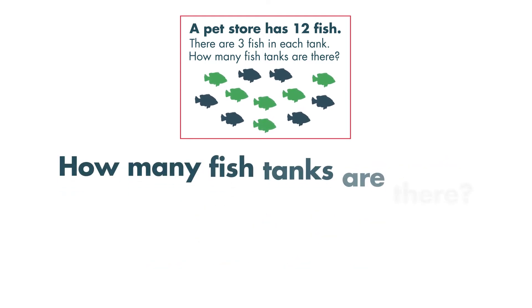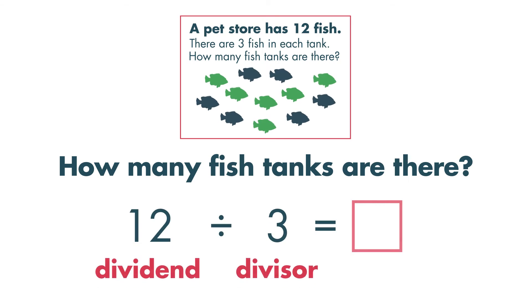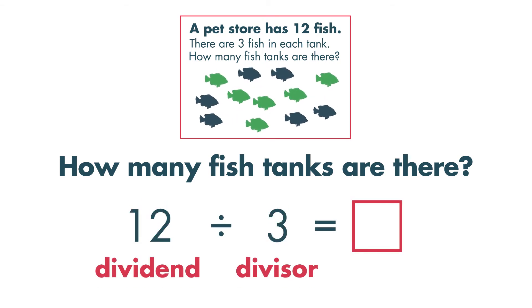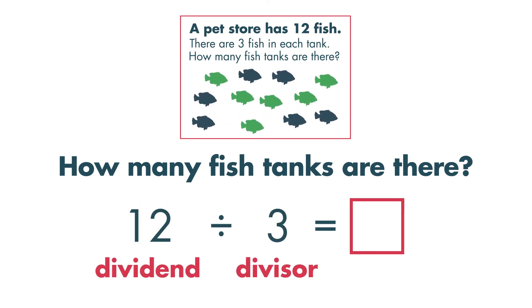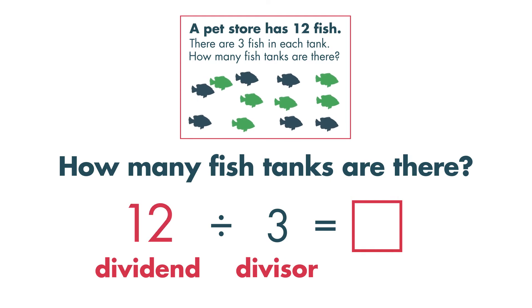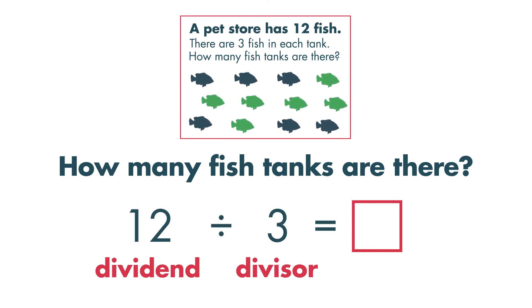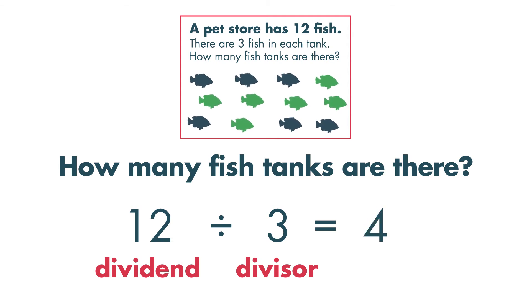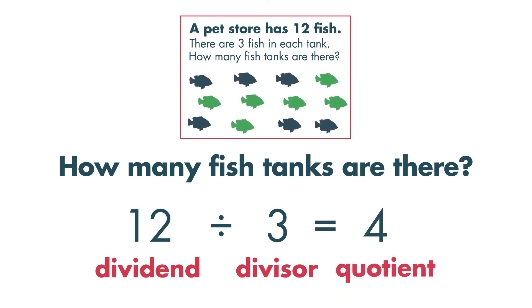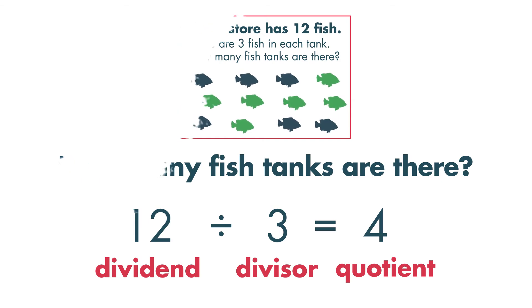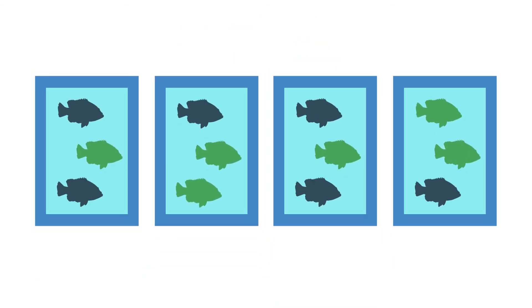How many fish tanks are there? We can divide 12 by 3 to find the number of fish tanks. 12 divided by 3 is equal to 4. 4 is the quotient — this is the answer to a division problem. There are 4 tanks.